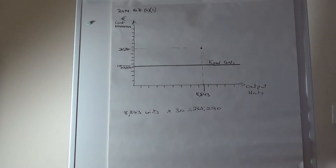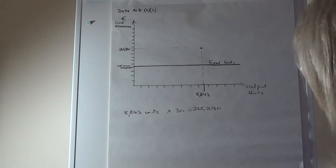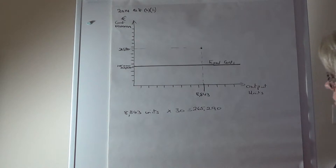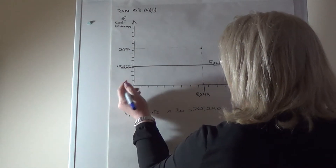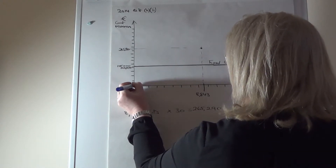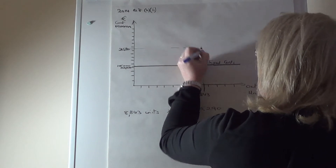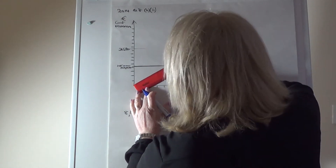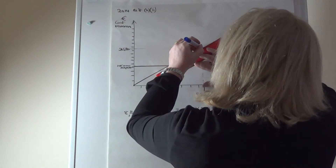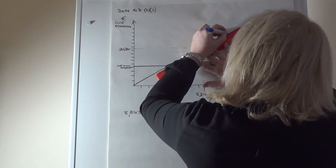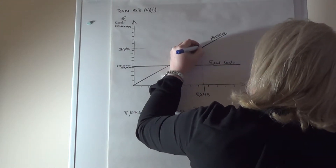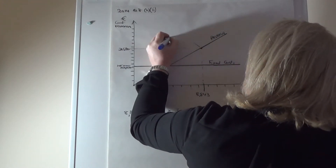The two other lines to draw are total revenues and total costs — both pass through the break-even point. Total revenues always start at zero: if you don't sell any units you have no revenue. So draw the revenue line from zero through the break-even point and label it.